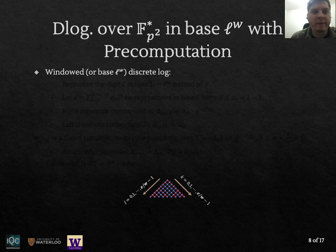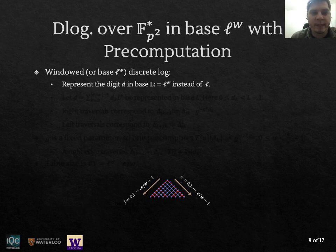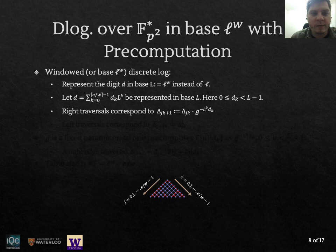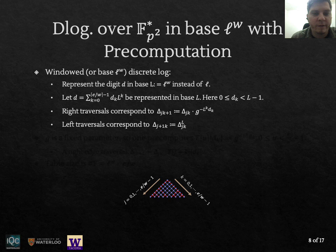Zanon et al. also showed that if we use a windowed version of the discrete logarithm meaning that we work with base ℓ^w instead of ℓ to represent the digits we can do some nice precomputation. So basically we represent the digits in base capital L which is ℓ^w for some w and the right traversal will correspond to removing now large digits mod ℓ^w and the left traversals are going to correspond to raising the elements to the power of capital L or ℓ^w.